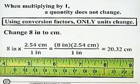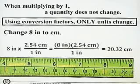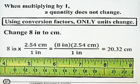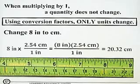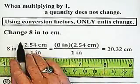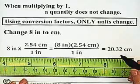As I've already mentioned, when we're multiplying by 1, a quantity doesn't change. And when we use conversion factors, only the units change. So let's work through an example here. We're going to change 8 inches to centimeters.